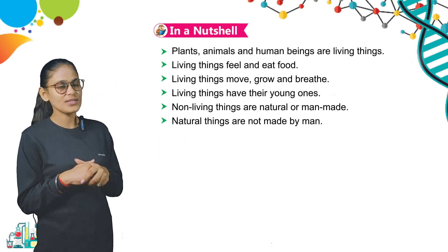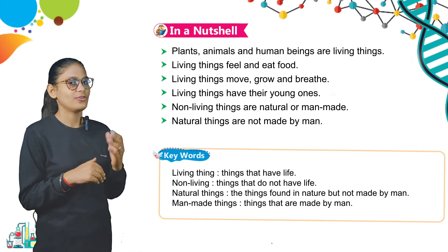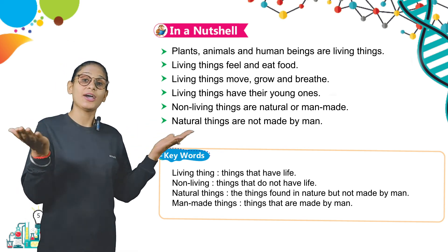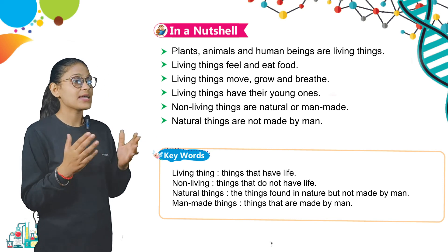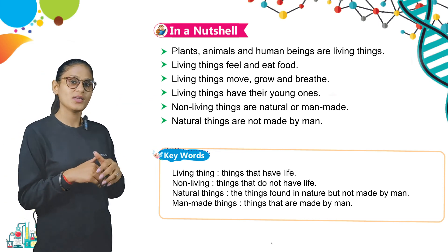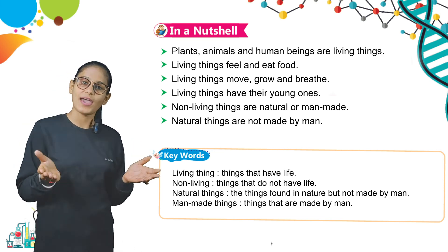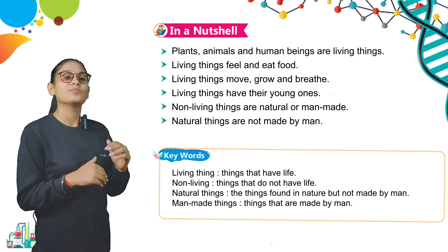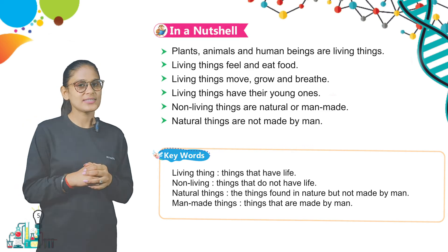Now we read our keywords. The first keyword is living thing — things that have life. The second keyword is non-living — things that do not have life. The third is natural things — things found in nature but not made by man. The last one is man-made things — things that are made by man. Thank you students, we will meet in the next class.